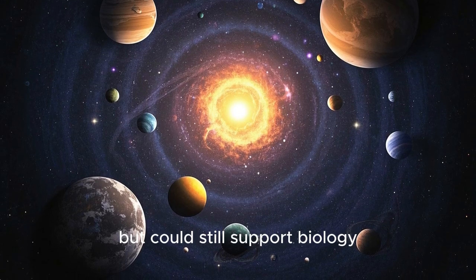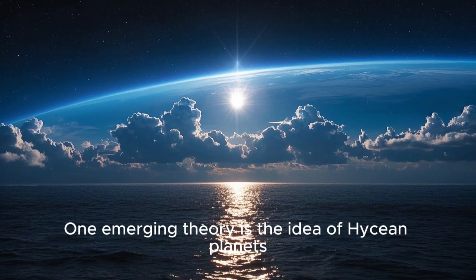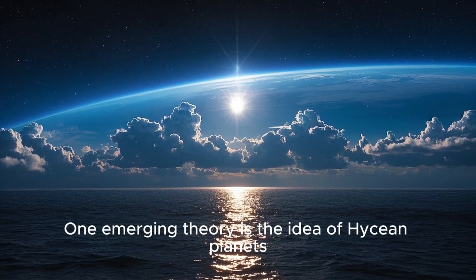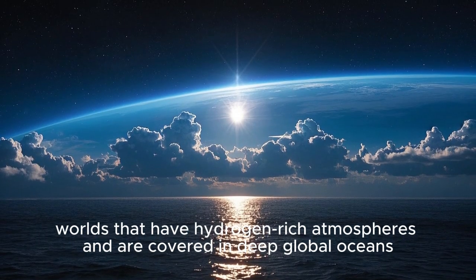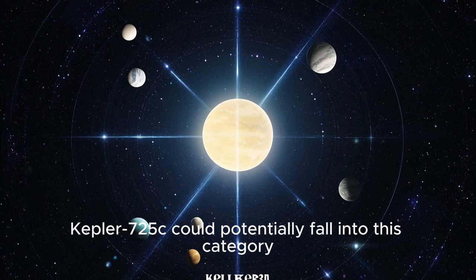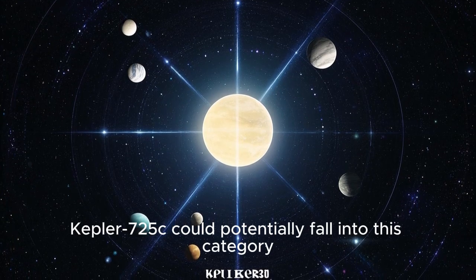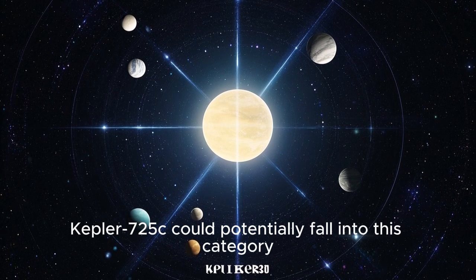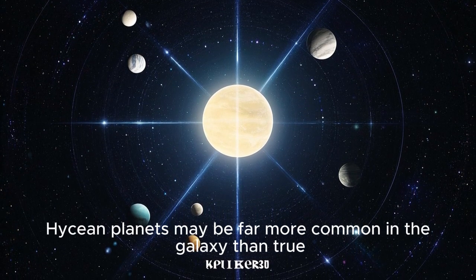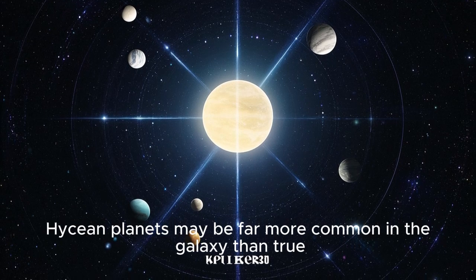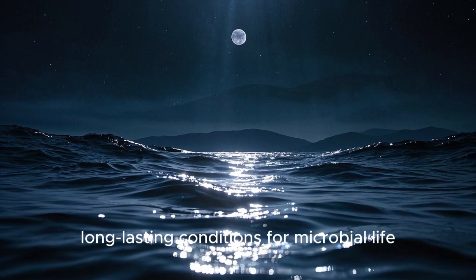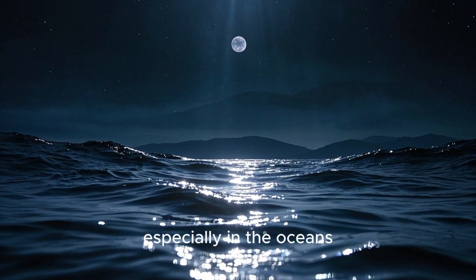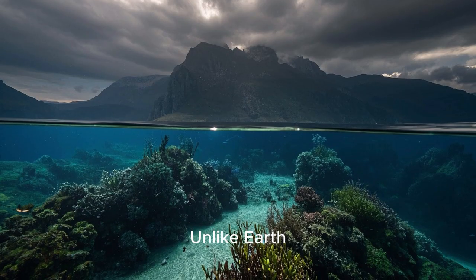One emerging theory is the idea of Hyacian planets, worlds that have hydrogen-rich atmospheres and are covered in deep global oceans. Kepler-725c could potentially fall into this category. Hyacian planets may be far more common in the galaxy than true Earth analogs, and might offer stable, long-lasting conditions for microbial life, especially in the oceans.